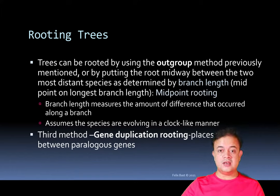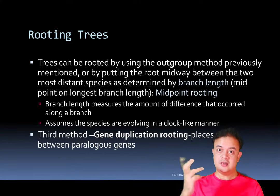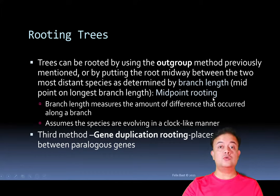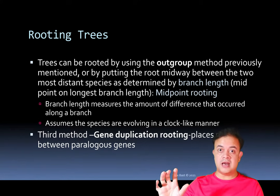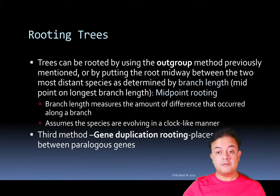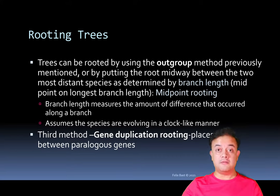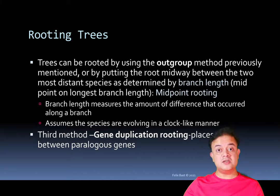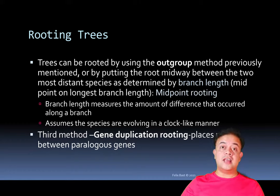There are three main methods of rooting trees. The first is outgroup rooting — deliberately adding a taxon not part of your ingroup. The second is midpoint rooting: branch length measures the amount of difference that occurred along the branch. In midpoint rooting, you place the root in the midpoint of the longest branch from the rest of the taxa, assuming that the species with the longest branch is most different. This requires the molecular clock hypothesis — that mutations accumulate at a constant rate.